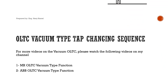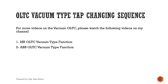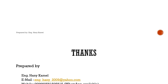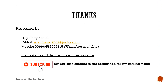For more videos on the vacuum OLTC, please watch the following videos on my channel: MR OLTC vacuum type function, and ABB OLTC vacuum type function. Regulating winding switching types — this topic will be in my next video, and will be followed later by tap changer testing. Finally, thank you for watching. Hope it meets your interest. This video was prepared by Engineer Hanny Camel. For any suggestions or discussions, my contacts are shown. Do not forget to subscribe to my channel to get notification for the next video.